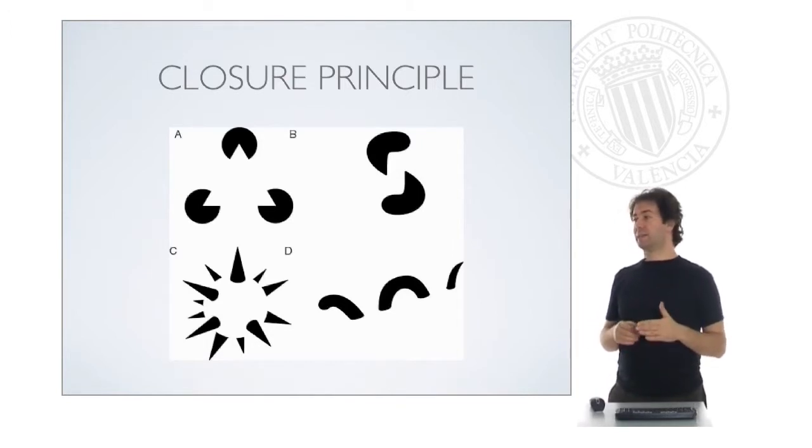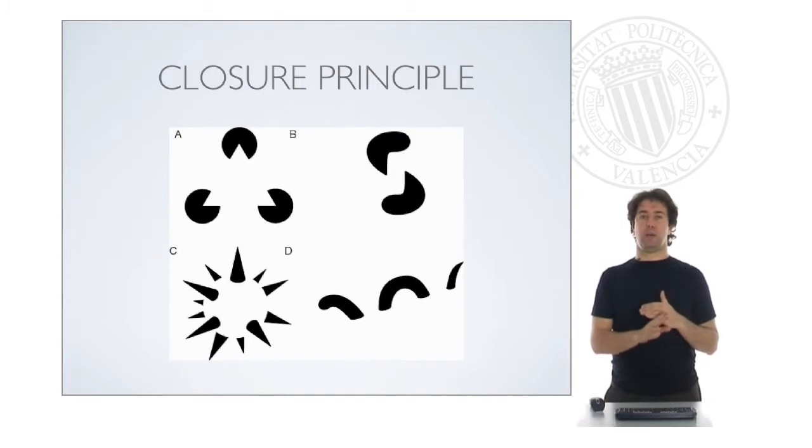In example D, we can imagine that this is like a snake which is going up and down. We can imagine the parts of the snake which are not visible. We can imagine that it's some kind of ground or this is water and maybe the snake is doing that movement. We imagine perfectly how the rest of the snake which is not visible could be drawn.